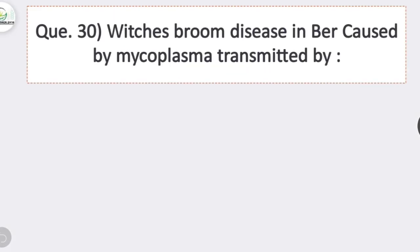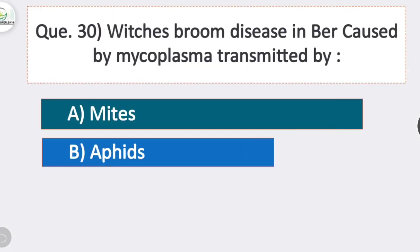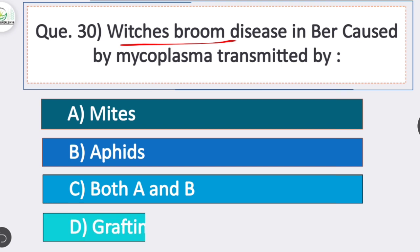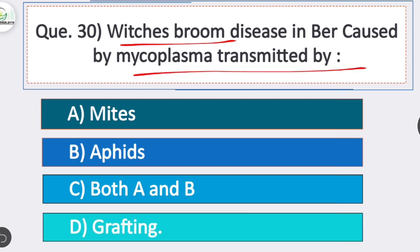Question 30: which broom disease in ber is caused by mycoplasma and transmitted by? Option D is correct — grafting. Broom disease in ber is caused by mycoplasma and is transmitted by grafting.